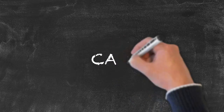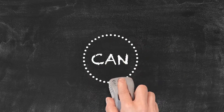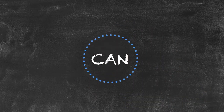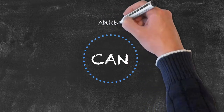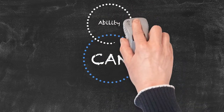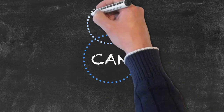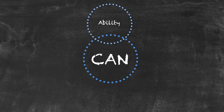Let's have a look at how we might approach teaching the modal auxiliary verb 'can'. Initially, we introduce the word 'can' in the context of ability. Going back to our earlier examples: I can ride a bike, you can swim, you can speak English.